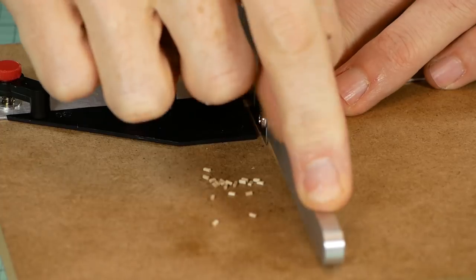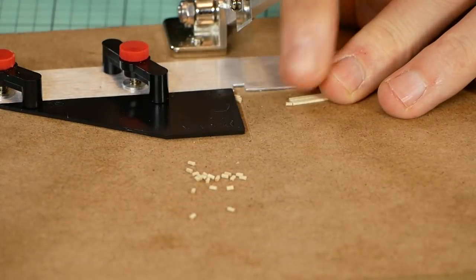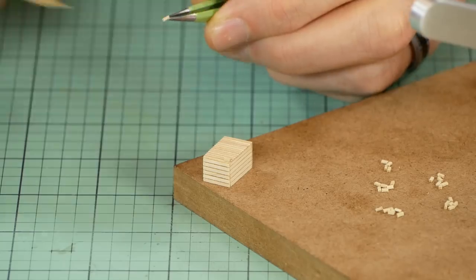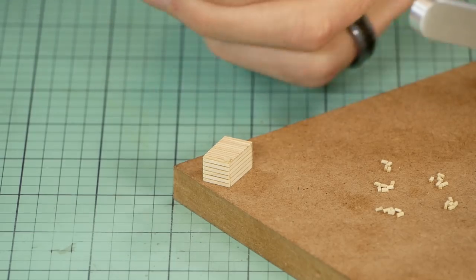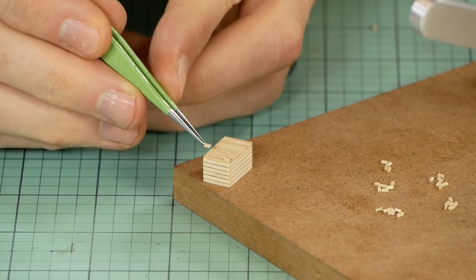The last part of assembly is adding the feet by using 4x4 scale strip wood. Each foot is about 1.5mm long and a total of 6 are glued to the base of each crate.